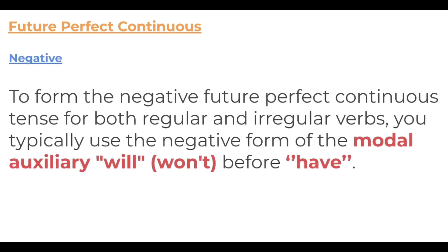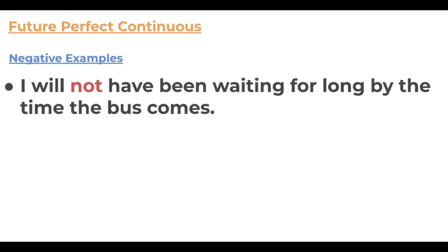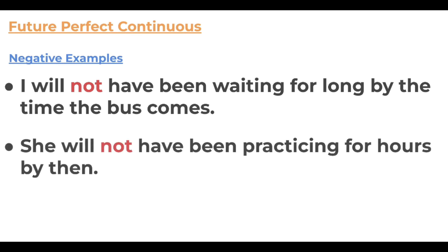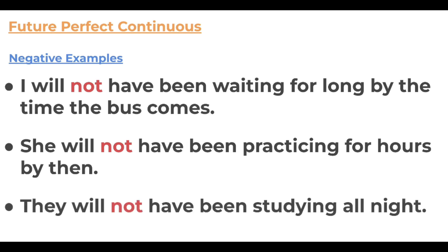For negatives in the future perfect continuous, for both regular and irregular verbs, use 'will not' before 'have'. Examples: 'I will not have been waiting for long by the time the bus comes.' 'She will not have been practicing for hours by then.' 'They will not have been studying all night.' The 'not' is sandwiched between the auxiliary verbs 'will' and 'have', just like with the future perfect.